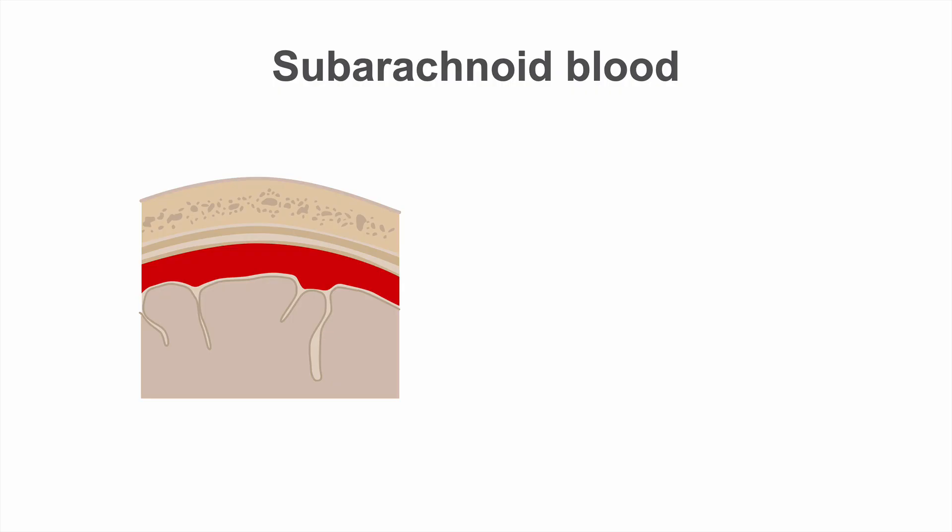Detection of subarachnoid hemorrhage on CT is critical to the care of the patient since it can be the first and only sign of a ruptured aneurysm. You need to be aware that the findings of subarachnoid hemorrhage can be very subtle on CT, so that you will examine the scan appropriately.